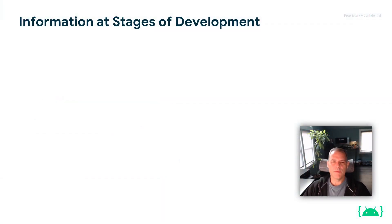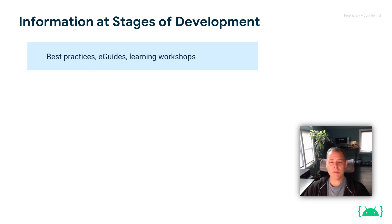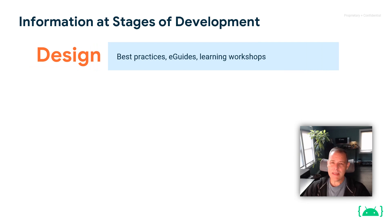During each stage of development, you'll probably be looking for information in a variety of places. A lot of these will cross over, but your needs will be dependent upon the type of information you're looking for. For example, during the design stage when you're planning and don't have everything completely laid out, you'll be reviewing best practices, e-guides, learning materials, and sessions such as this — really designed to help you prepare for the challenges you might face and some of the design ideas around your larger systems in a game.